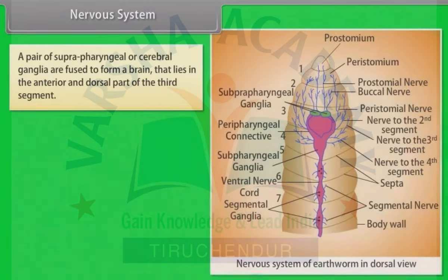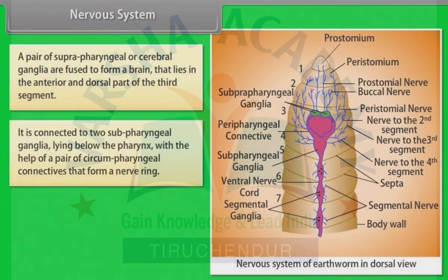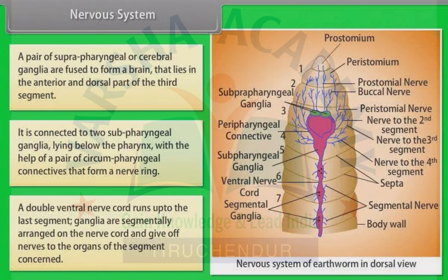Nervous system: A pair of suprapharyngeal or cerebral ganglia are fused to form a brain, lying in the anterior dorsal part of the third segment. It is connected to two subpharyngeal ganglia lying below the pharynx by a pair of circumpharyngeal connectives that form a nerve ring. A double ventral nerve cord runs up to the last segment. Ganglia are segmentally arranged on the nerve cord and give off nerves to the organs of the segment concerned.